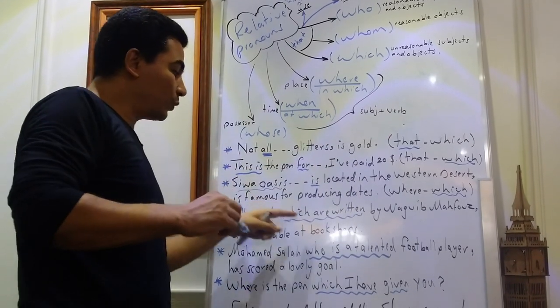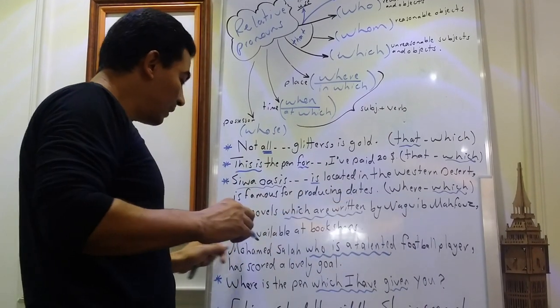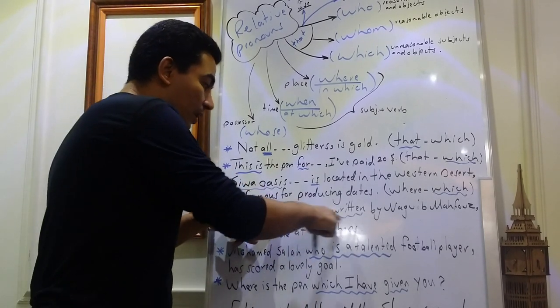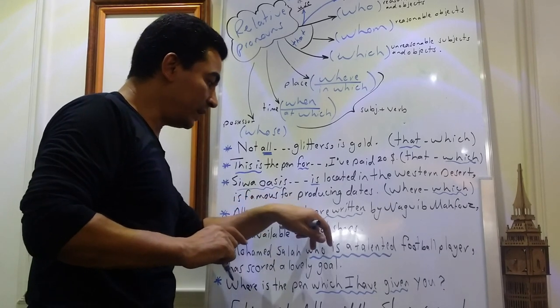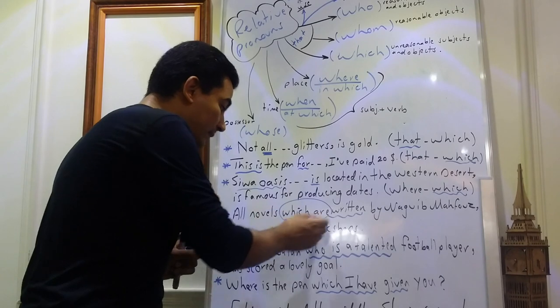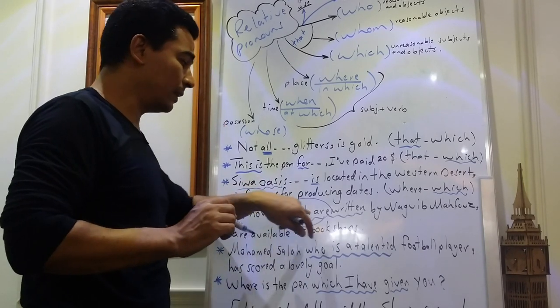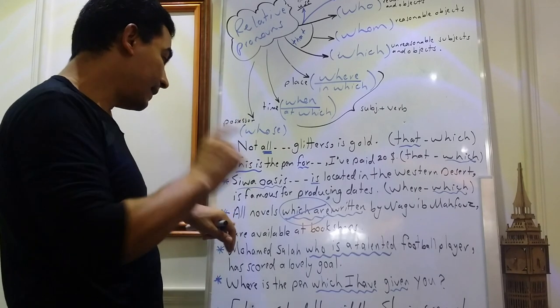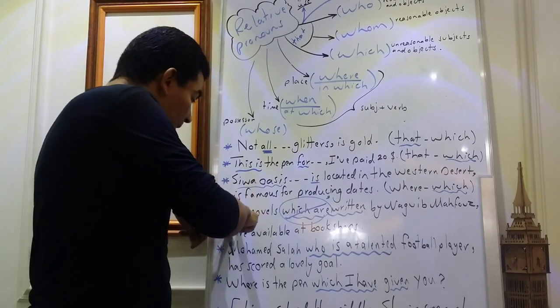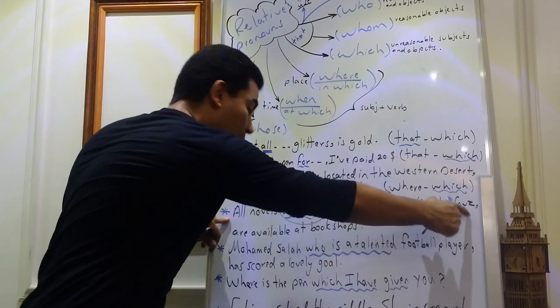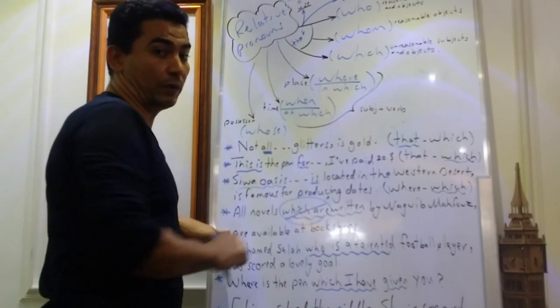All novels which are written by Nagib Mahfouz are available at bookshops. Take care. Which are written. Relative pronoun, verb to be, plus participle. In this case, I can omit the relative pronoun and verb to be to be replaced by comma. So I can say the sentence as follows. All novels, comma, written by Nagib Mahfouz, comma, are available at bookshops.